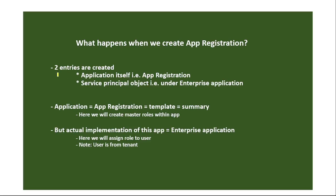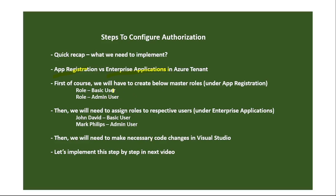When we create an app, two entries are created: one is the application itself — the app registration — and another is the service principal object under enterprise applications. Under app registration we will create master roles, and under the service principal object we will assign these roles to users. Note that users are in the tenant and not in the application. As per our requirement, we will create the two master roles — basic user and admin user — under app registration, and assign these roles to the respective users under enterprise applications.